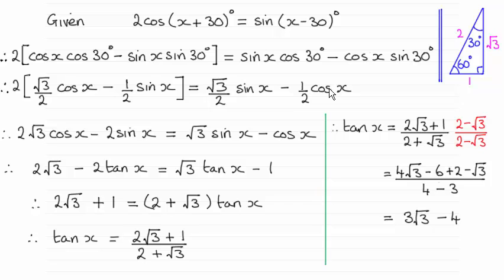And then what I've decided to do next is to get rid of the fractions. I notice that these two 2's cancel out and that would just leave us with root 3 cos x minus sine x. But then I've gone on to multiply throughout by another 2, so we end up with this line here.